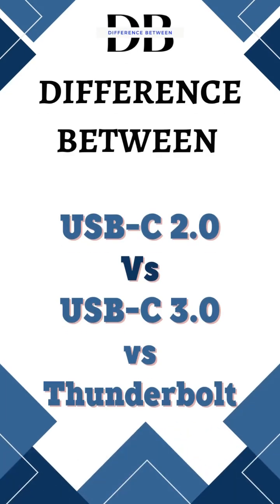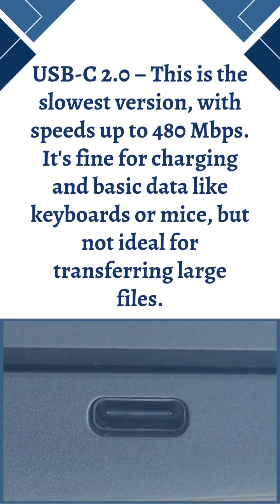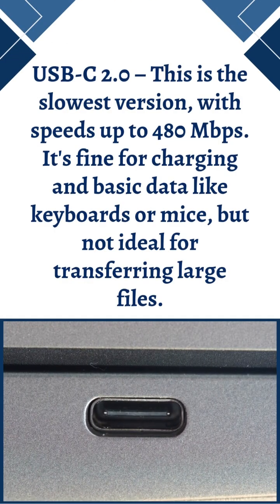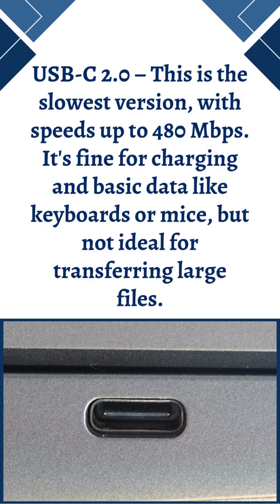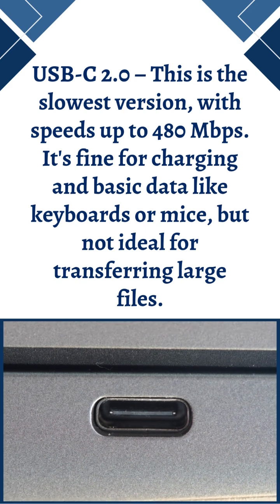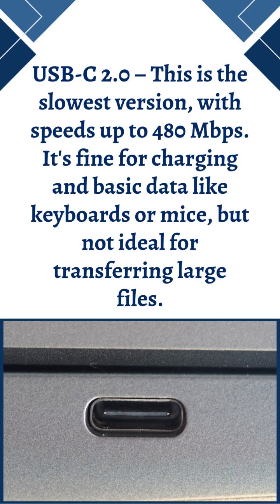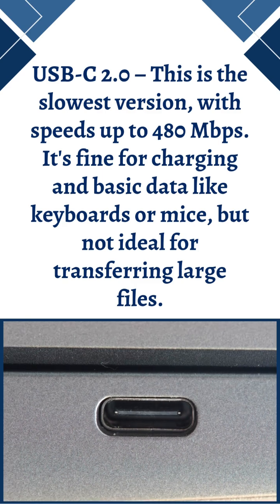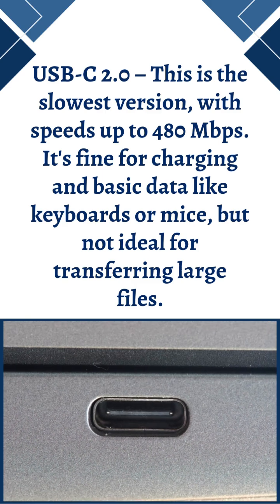Difference between USB-C 2.0, 3.0, and Thunderbolt. USB-C 2.0 is the slowest version with speeds up to 480 megabits per second. It's fine for charging and basic data like keyboards or mice, but not ideal for transferring large files.